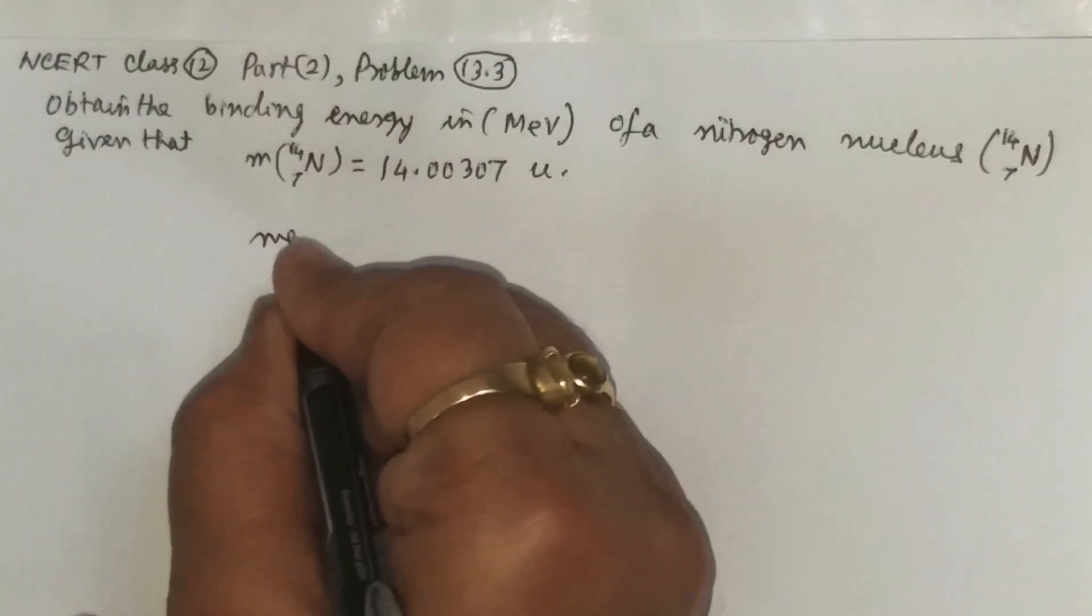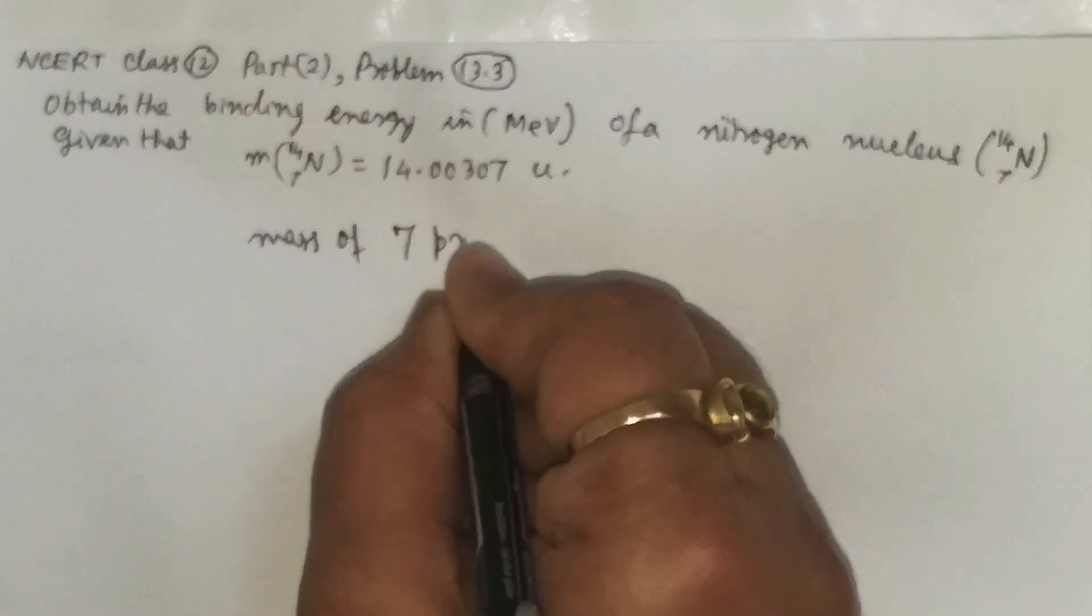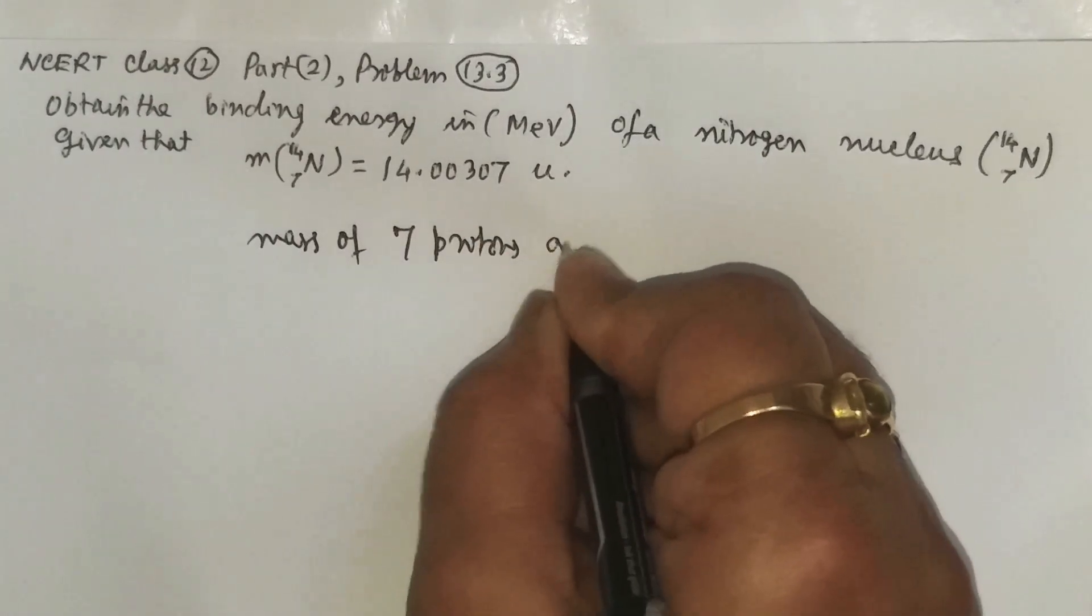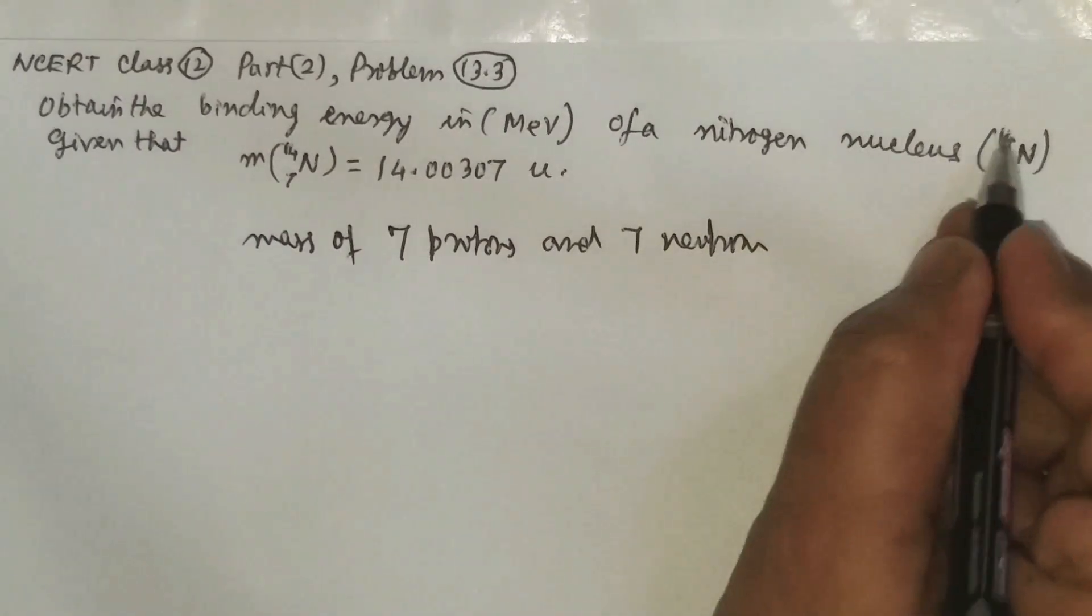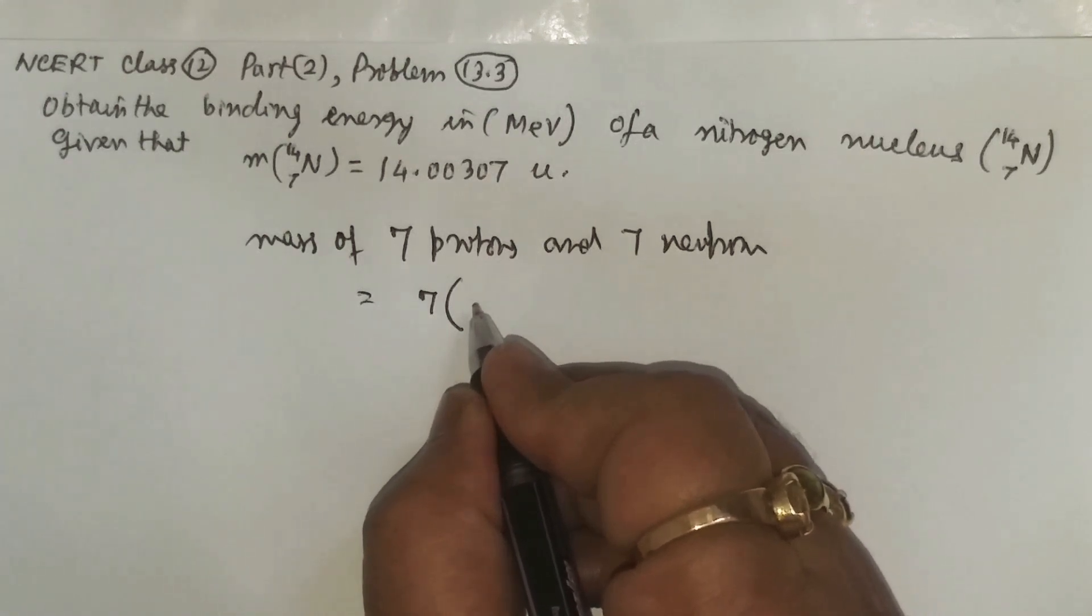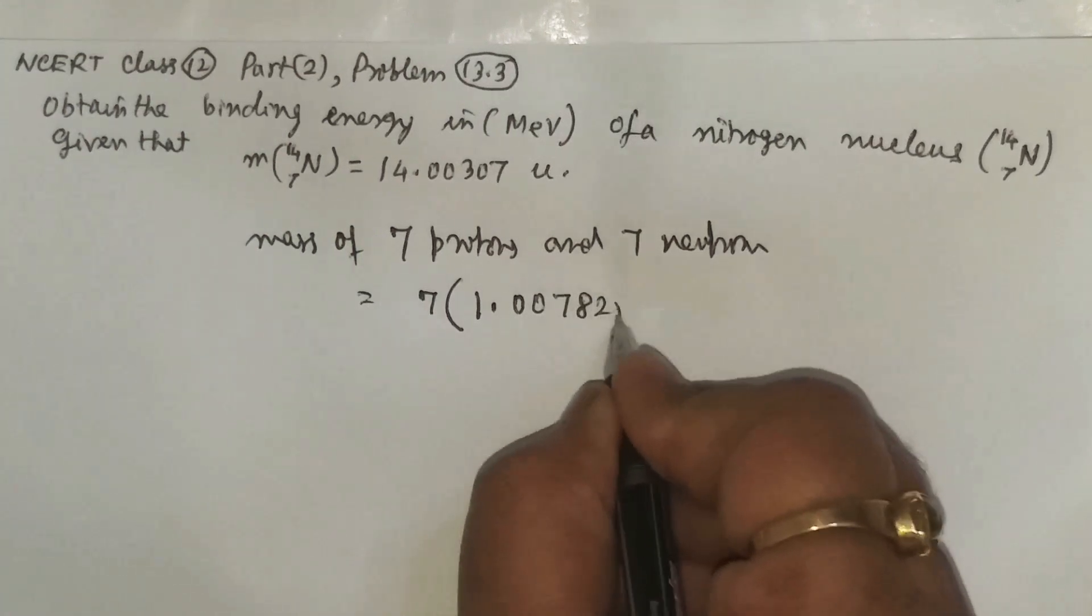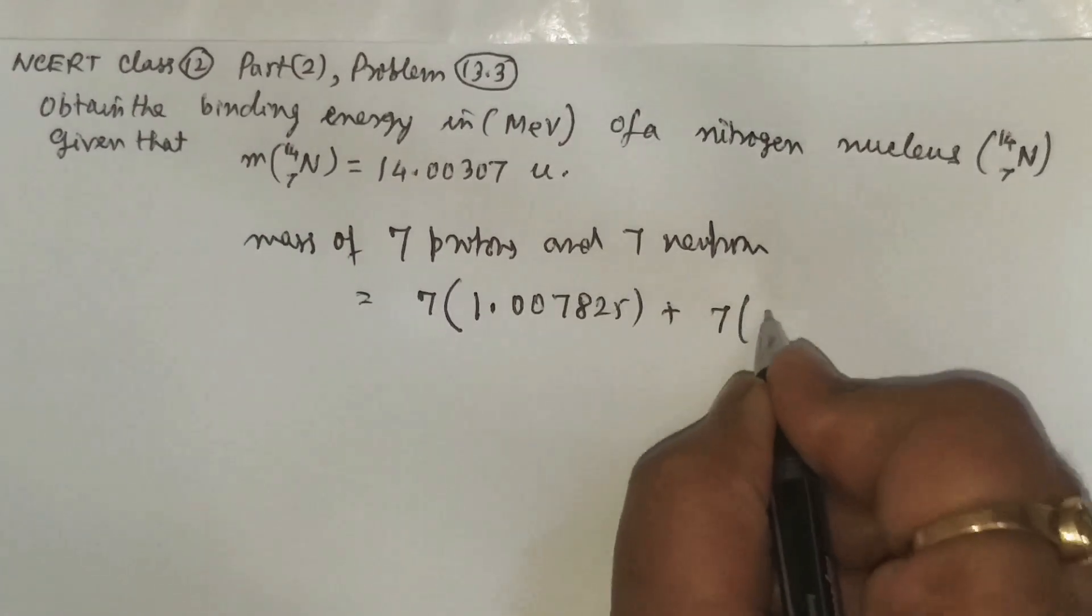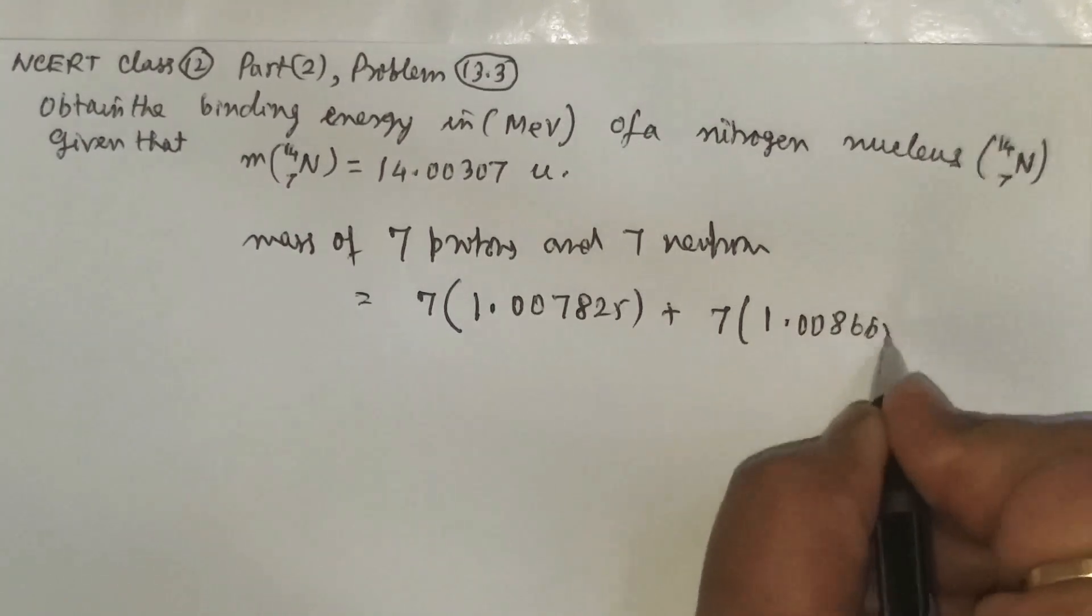What we have is it is based on some data: mass of seven protons and seven neutrons which are present in the nucleus. The mass of proton in atomic mass unit is 1.007825 and the mass of neutron in atomic mass unit is 1.008665.